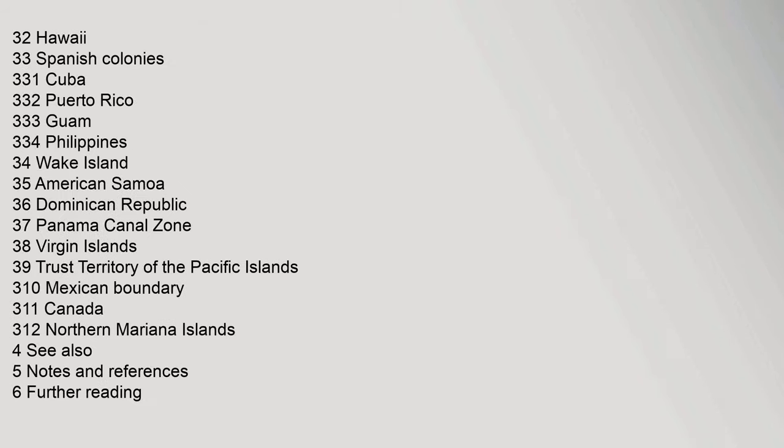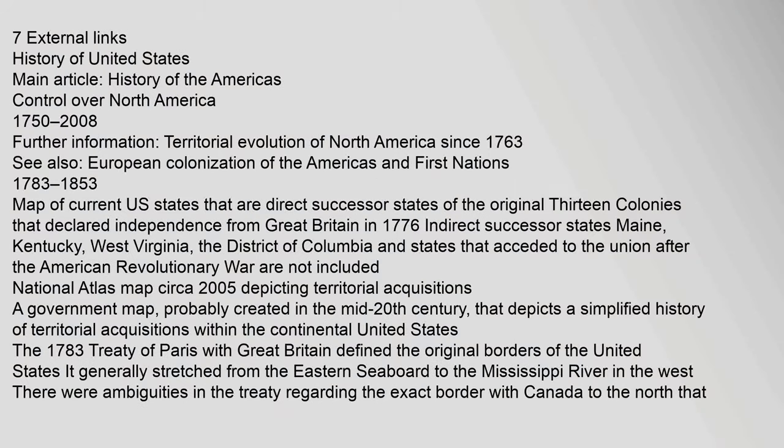Also listed: the Mexican Cession, Gadsden Purchase; since 1853: Alaska, Hawaii, Spanish Colonies including Cuba, Puerto Rico, Guam, Philippines; Wake Island, American Samoa, Dominican Republic, Panama Canal Zone, Virgin Islands, Trust Territory of the Pacific Islands, Mexican Boundary, Canada, and Northern Mariana Islands. See also, Notes and References, Further reading, and External links.